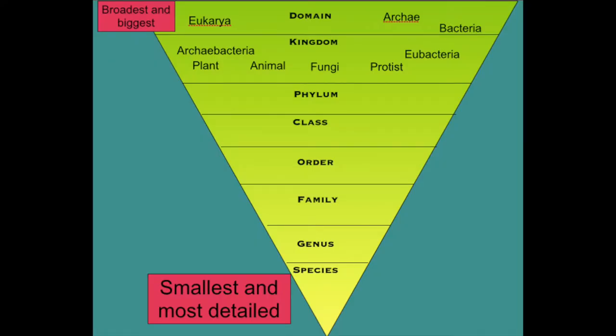So how do we classify? We base it on similarities in all four things: structure, fossils, DNA, and embryology. When you classify, there's a reverse pyramid — upside down because the first grouping is very broad and general, and as you go through the classification, it gets very narrow until you're alone within your own species. It goes: domain, kingdom, phylum, class, order, family, genus, and species.